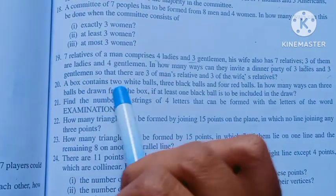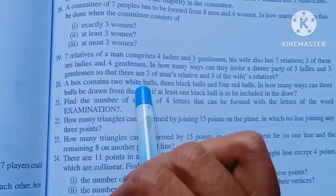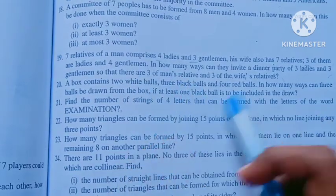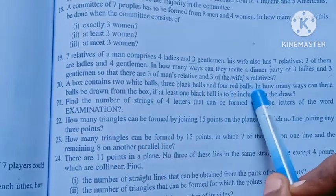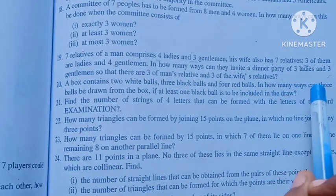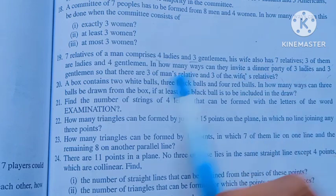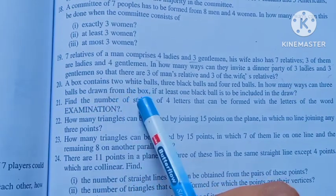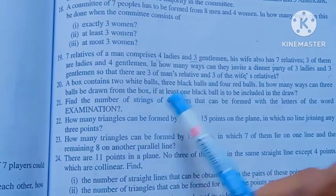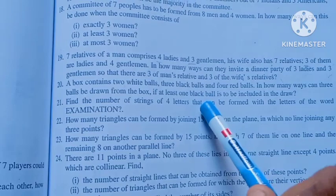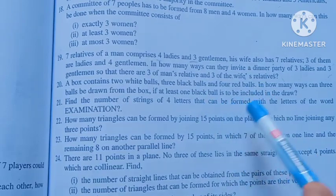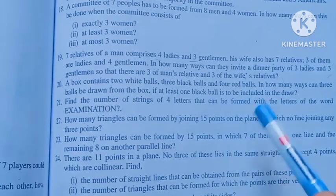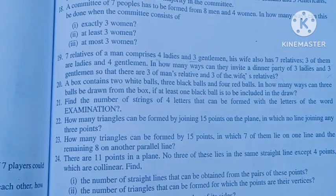A box contains 2 white balls, 3 black balls and 4 red balls. How many ways can 3 balls be drawn from the box if at least 1 black ball is to be included?